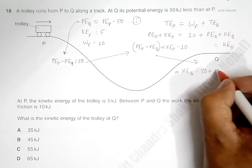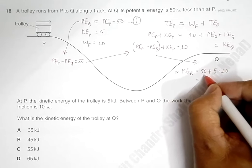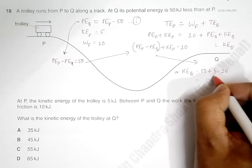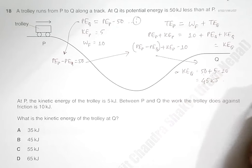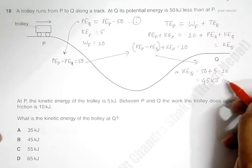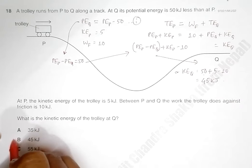So KE at P is equal to 5 minus 10. That's equal to 50 plus 5 minus 10, equal to 45 kilojoules. So this is the kinetic energy of the body at position Q, and it is given by choice number B.